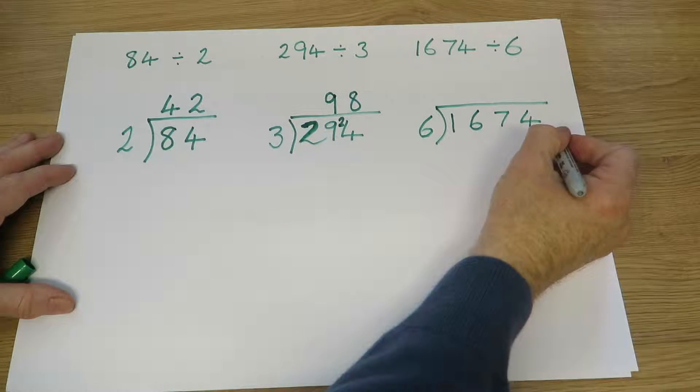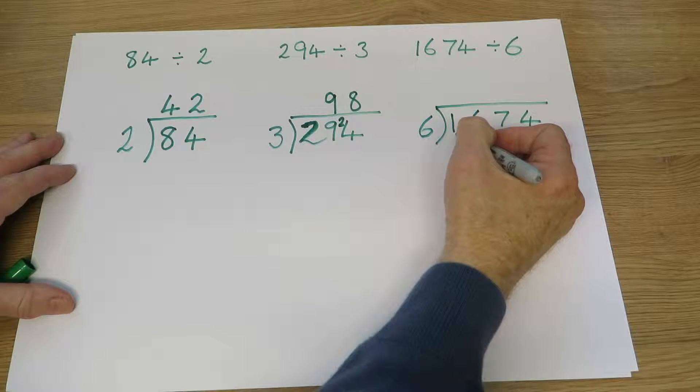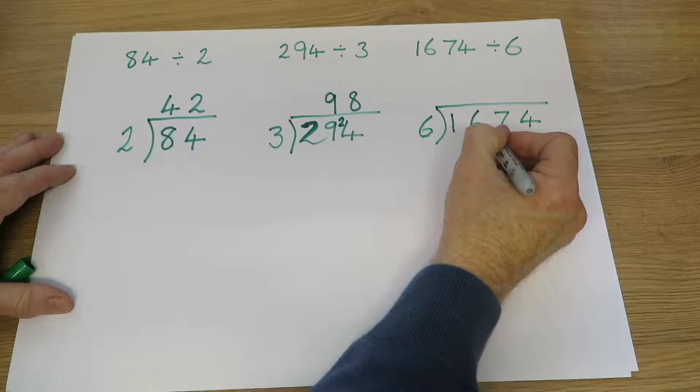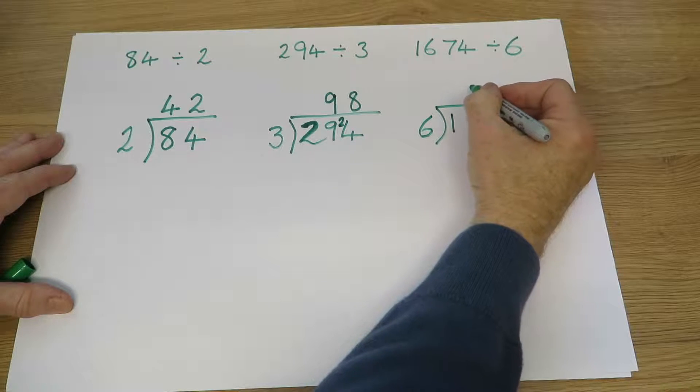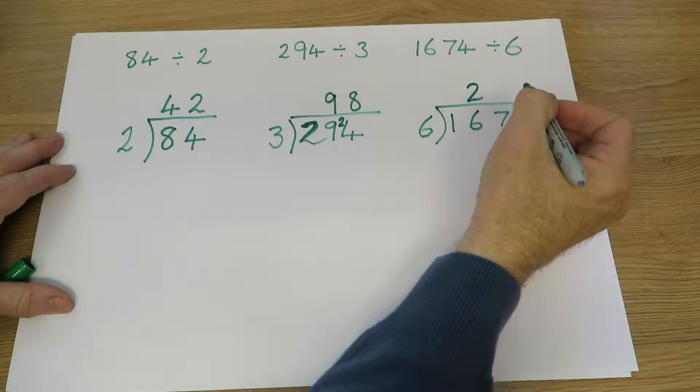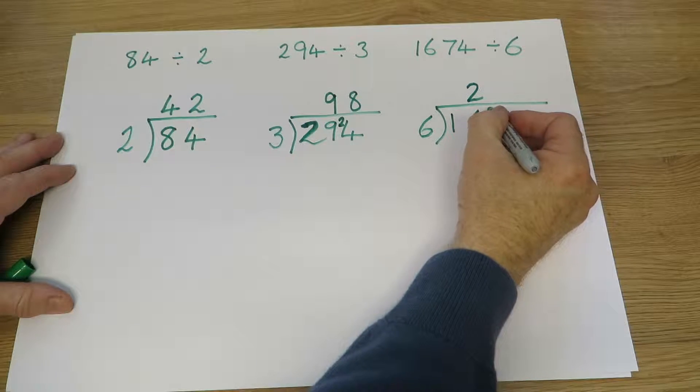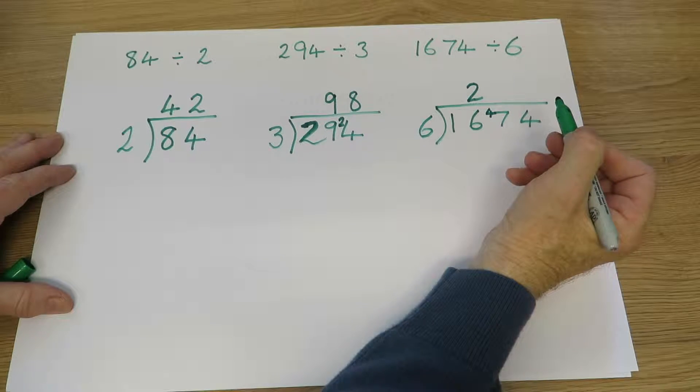Now, 1,674 divided by 6. 6 into 1 won't go, so we now have 16. How many sixes in 16? 2, because two sixes are 12. So there must be 4 left over, because 12 is 4 less than 16.